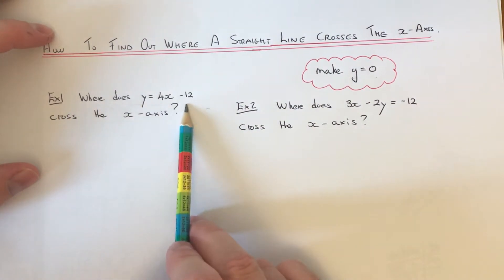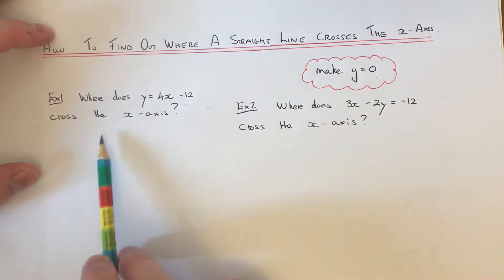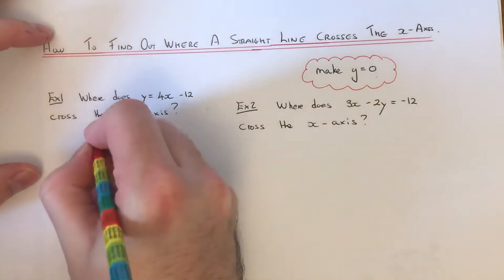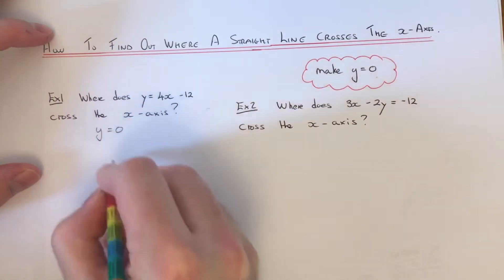Where does the line y equals 4x minus 12 cross the x-axis? What we need to do is substitute y equals 0.